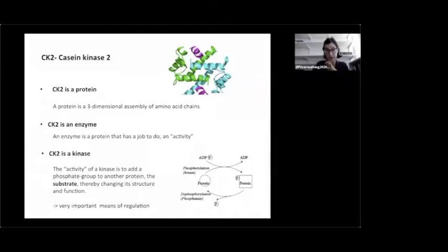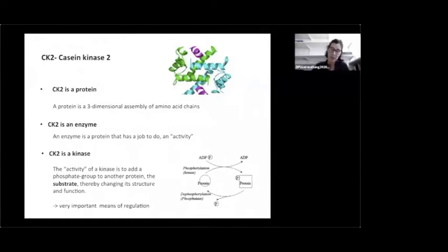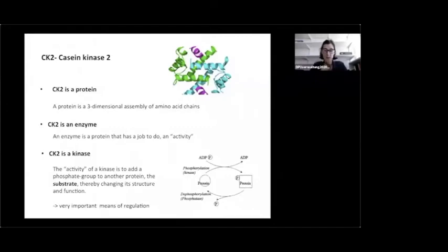CK2 is the name for a protein called casein kinase 2. A protein is a three-dimensional assembly of amino acid chains. CK2 is not just a protein — it's an enzyme, meaning it's a type of protein that has an active job to do in the cell, rather than just existing passively. CK2, as the name says, is a kinase.